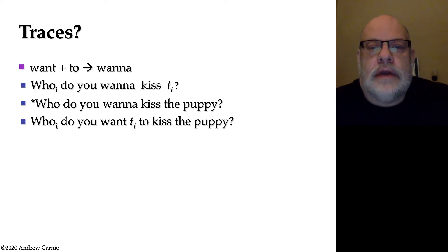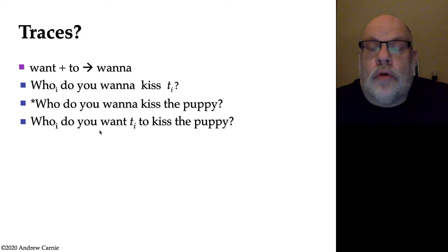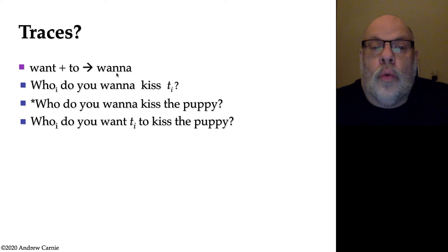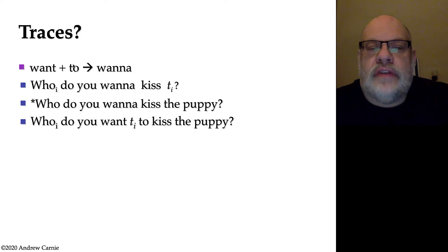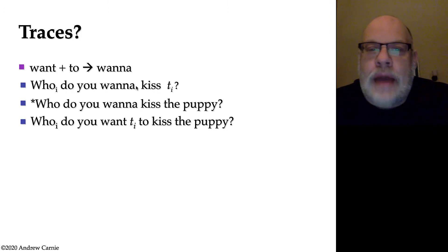The phenomenon we're going to use to argue for this comes from a property of English where you do certain kinds of contraction, or more accurately, where you don't do certain kinds of contraction. Let's look at this contraction that we call wanna contraction. Wanna is a contracted form found in spoken English where you take want, an adjacent infinitival to, and contract them together. So you can say, "who do you wanna kiss?" and want and to collapse together into wanna.